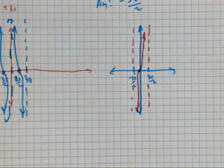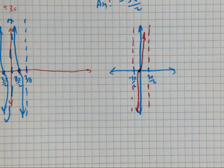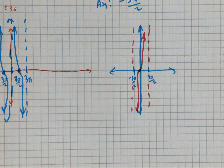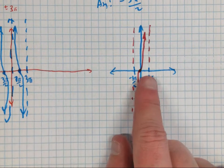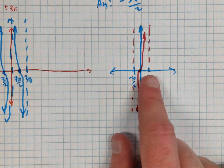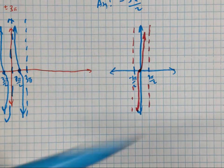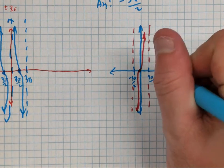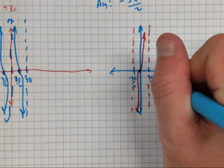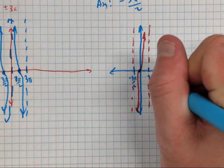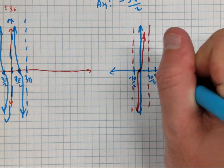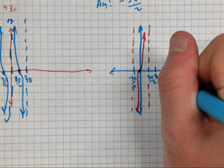I need to find this point between the asymptotes. What's the distance from here to here? Three pi over two. So what would I do to get the next point? Three pi over two plus three pi over two is three pi — and then what comes after that?